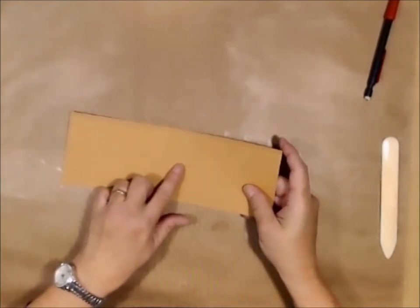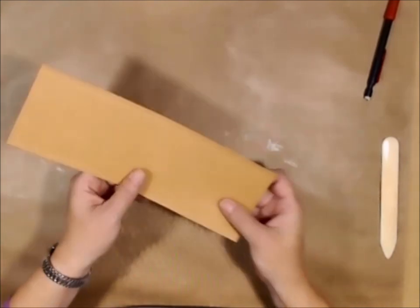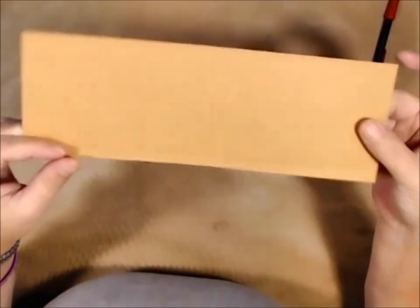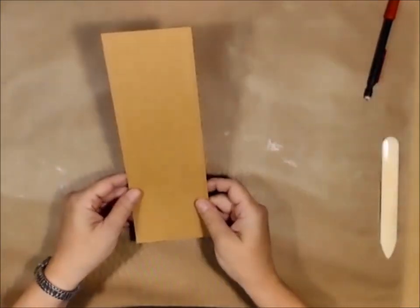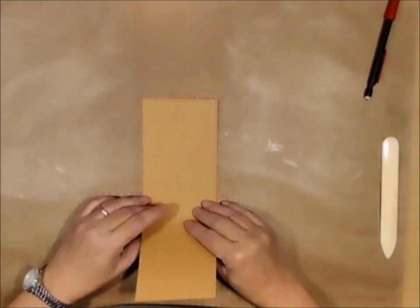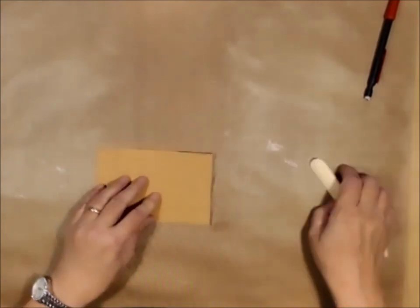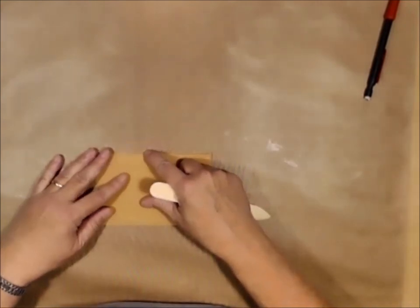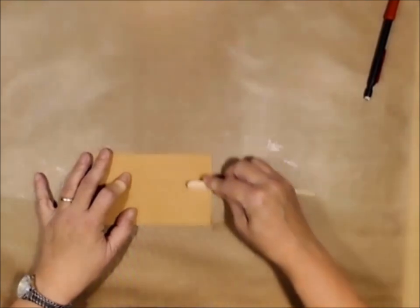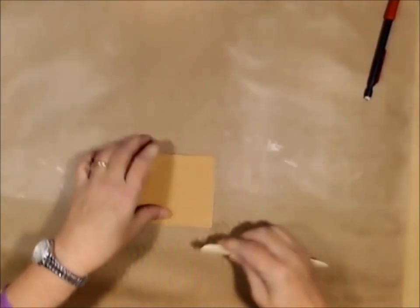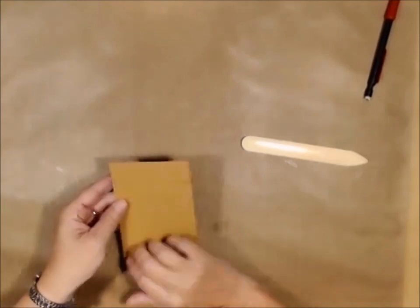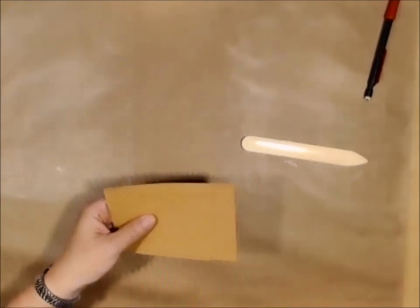Now this longer part is going to be my top. You'll see the score marks and this is going to be my bottom. So the first thing I'm going to do is I'm just going to pull this up just so I have my bottom set, kind of got a nice crease with my bone folder. And I'm going to bring this back real quick.